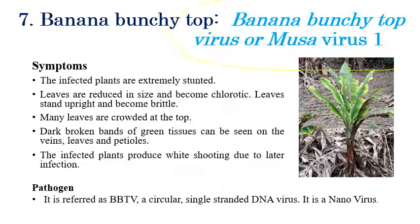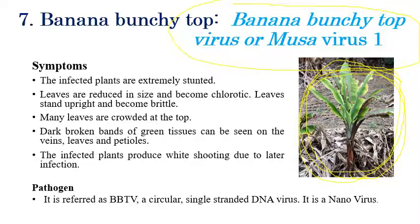The next very important disease is banana bunchy top, caused by banana bunchy top virus or Musa virus 1. The first and foremost symptom is extreme stunting of plants — normally banana plants grow to 3 to 4 meters, but bunchy top infected plants may not grow beyond half a meter to one meter.